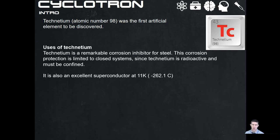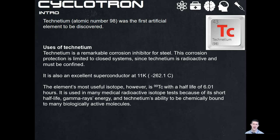Technetium is also an excellent superconductor at 11 kelvin, which is negative 262 degrees Celsius. Its most useful isotope however is technetium TC-99, which has a half-life of about six hours. That may sound kind of useless, but we use this in medical radioactive isotope tests because of the short half-life — it doesn't spend a lot of time in your body. Technetium's ability to be chemically bound to many biologically active molecules is its other really useful property. We can combine it with compounds and this is what's used extensively in medical science and medical physics.